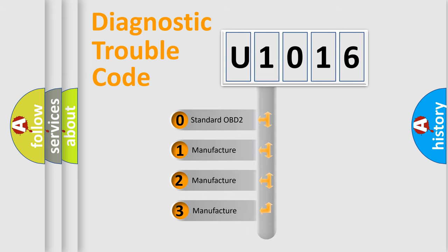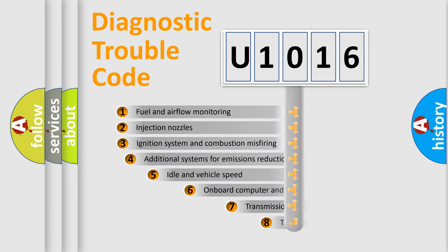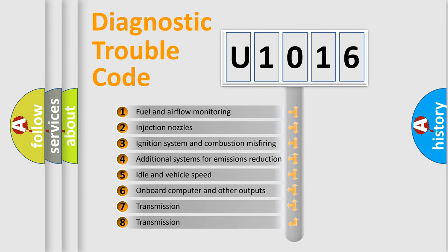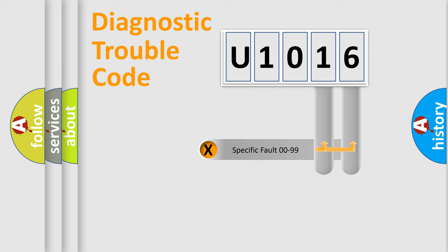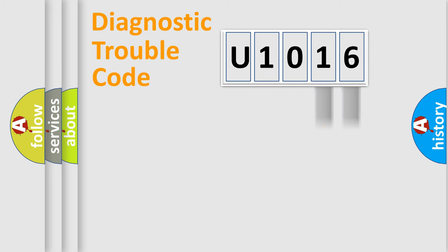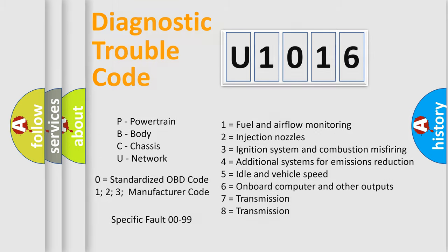If the second character is expressed as zero, it is a standardized error. In the case of numbers 1, 2, or 3, it is a more specific expression of a car-specific error. The third character specifies a subset of errors. This distribution is valid only for the standardized DTC code. Only the last two characters define the specific fault of the group, and such division is valid only if the second character code is expressed by the number zero.